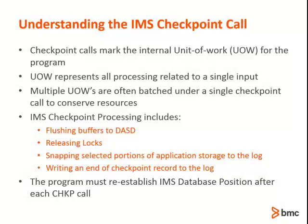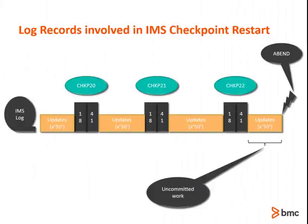Now let's look at checkpoint from the perspective of the IMS log records. IMS logs three types of records that are important to checkpoint restart: the 0x50 records, which contain the before and after images of each update; the 0x18 records, which are the records used for the restart; and the 0x41 records, which mark the completion of each checkpoint. Let's take a look at a log coming out of a DLI execution. For BMP it will be slightly different, but similar enough for our purposes.